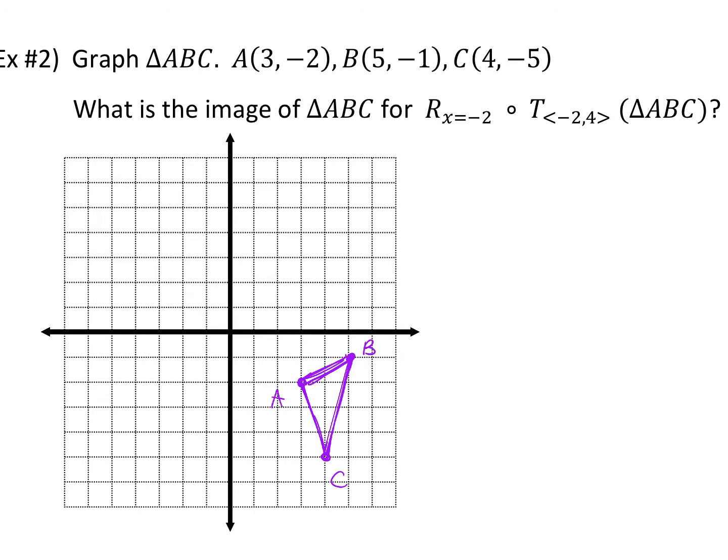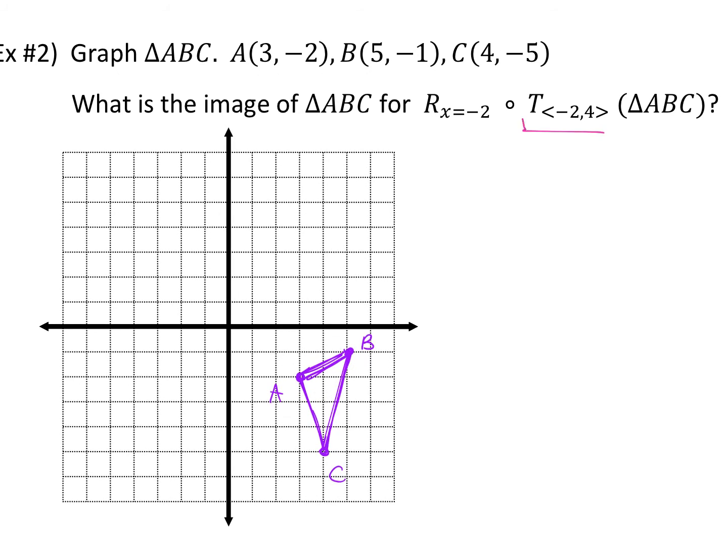So which part do you do first? Translation first. So we're going to go two to the left and four up. So A is two to the left, one, two, three, four, up. B is two to the left, one, two, three, four, up. And C is two to the left, one, two, three, four, up. Again, if you want to draw that triangle in, go for it.